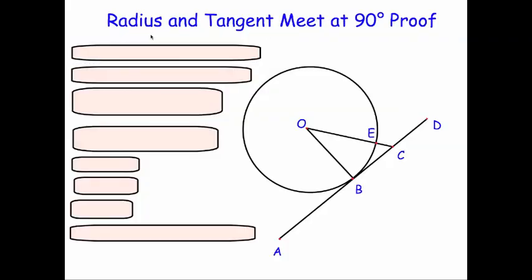In this video, we're going to prove that the radius and tangent always meet at 90 degrees. In other words, the radius OB is perpendicular, or meets at 90 degrees, to the tangent AD.